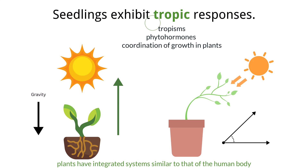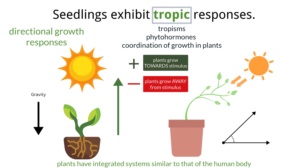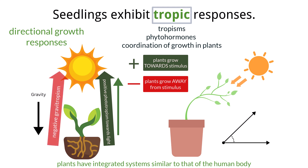Let's begin with tropisms. Tropisms refer to directional growth responses in plants. Tropisms can be positive or negative. Positive tropism results in plants growing toward the stimulus, while a negative tropism results in plants growing away from the stimulus. Shoots of a plant exhibit positive phototropism, or growth toward light, and at the same time, shoots exhibit negative gravitropism, or growth upward and away from gravity.